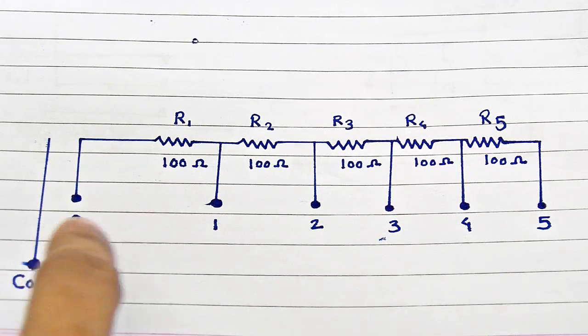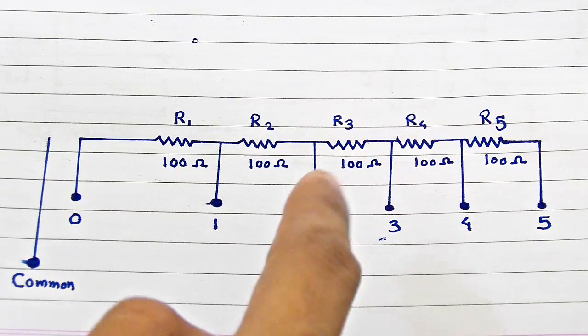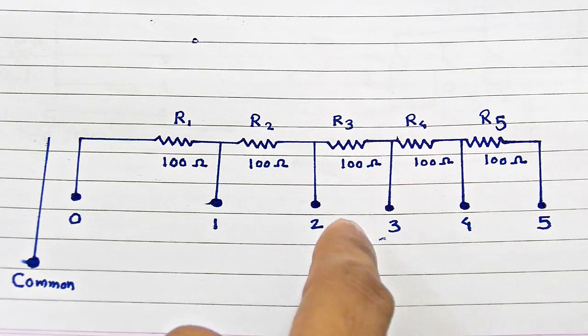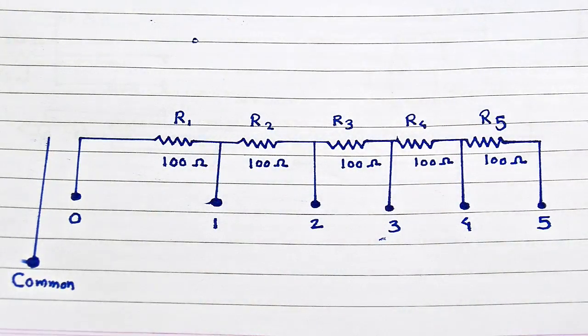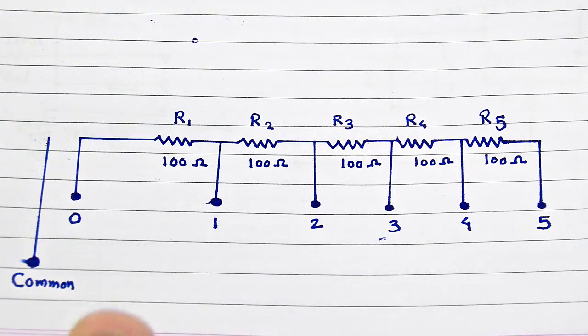What you gonna do is connect the resistors in such a way that one hundred ohm is connected between zero and one, another is between one and two, the next one is between two and three, and so on. Let me show you how you can do this in the easiest way.